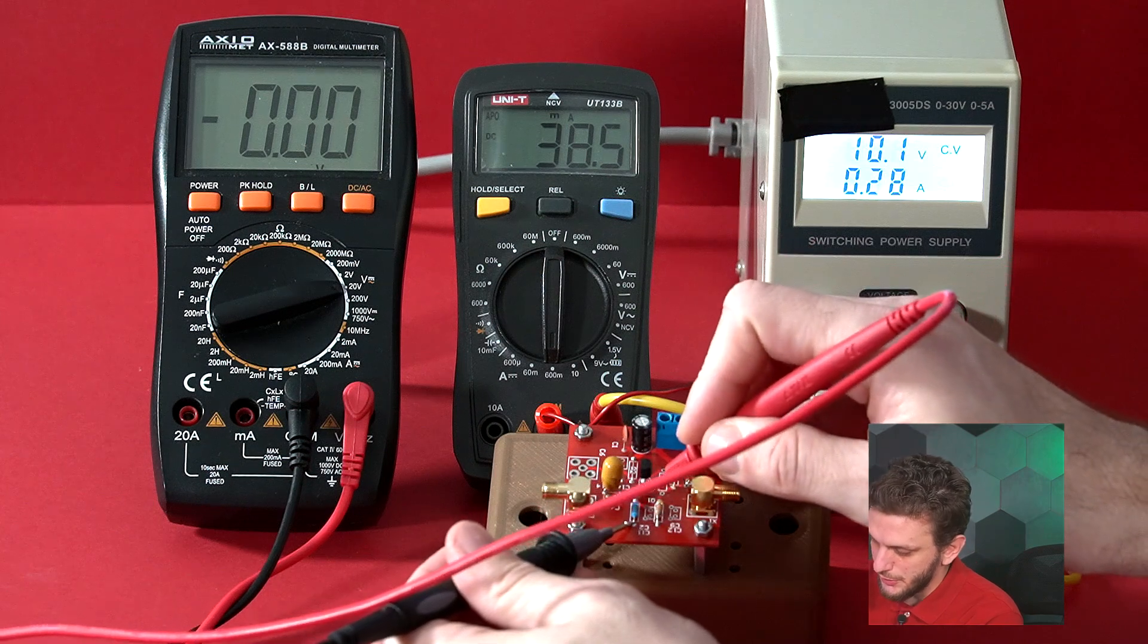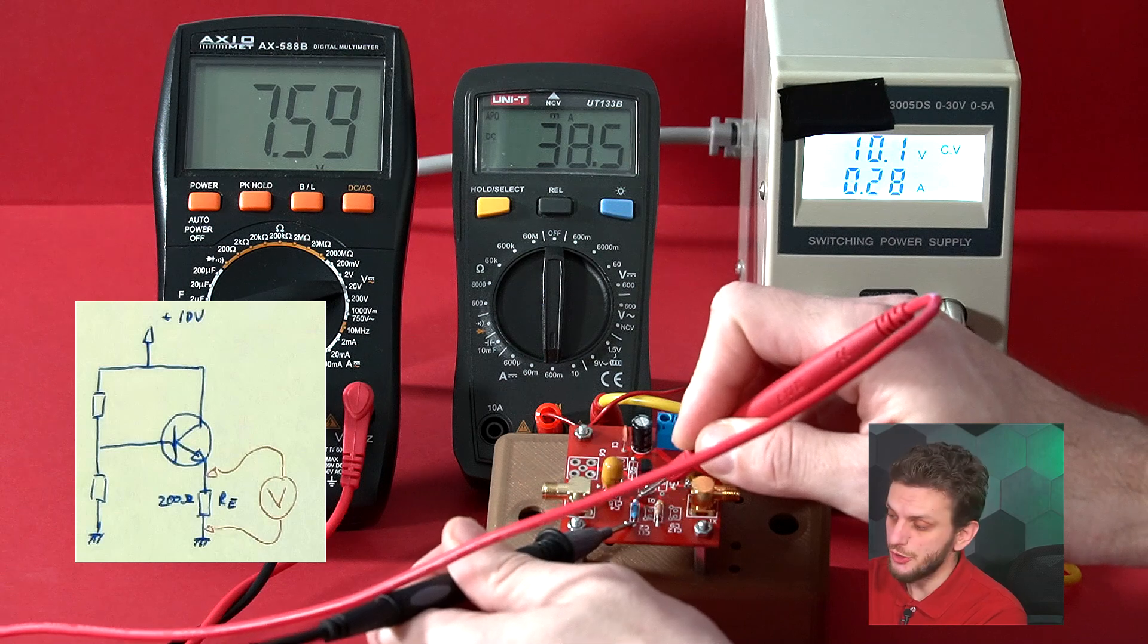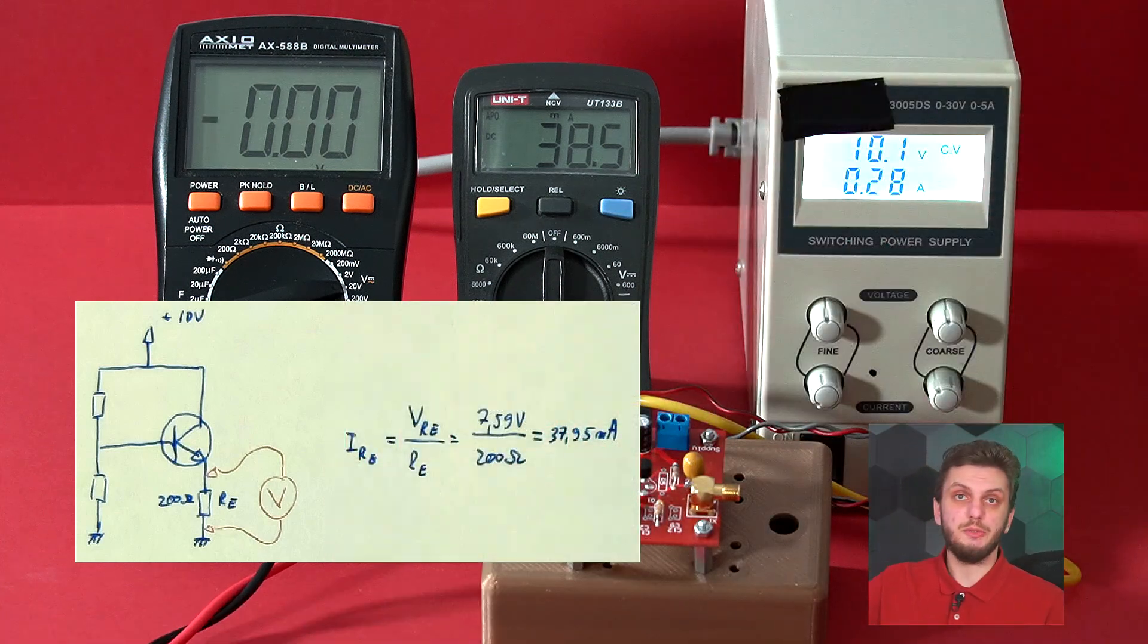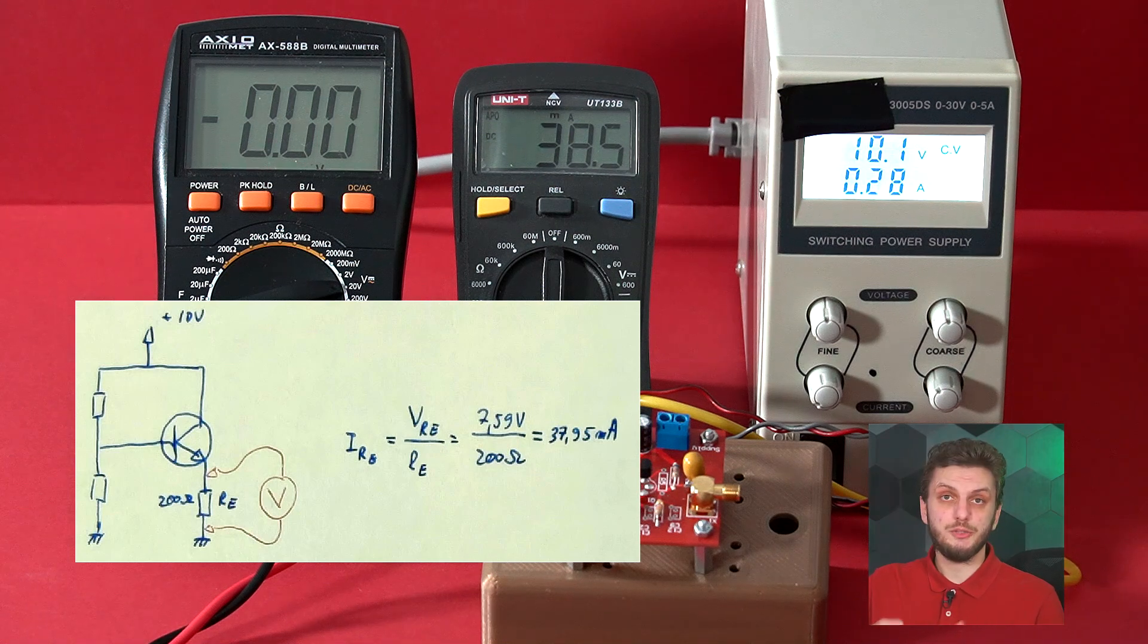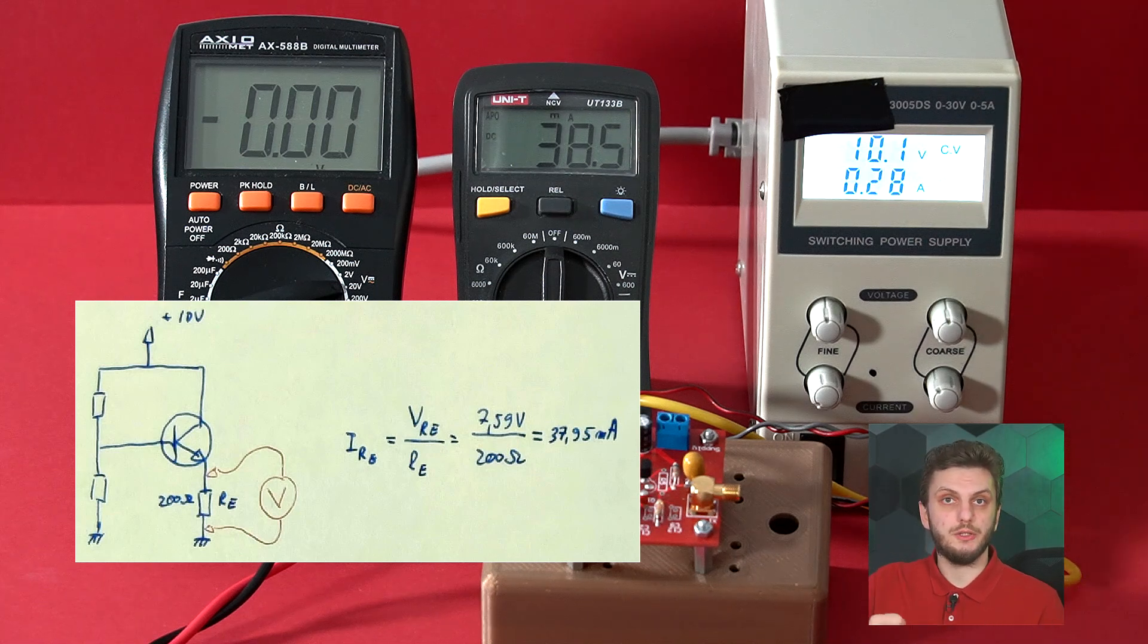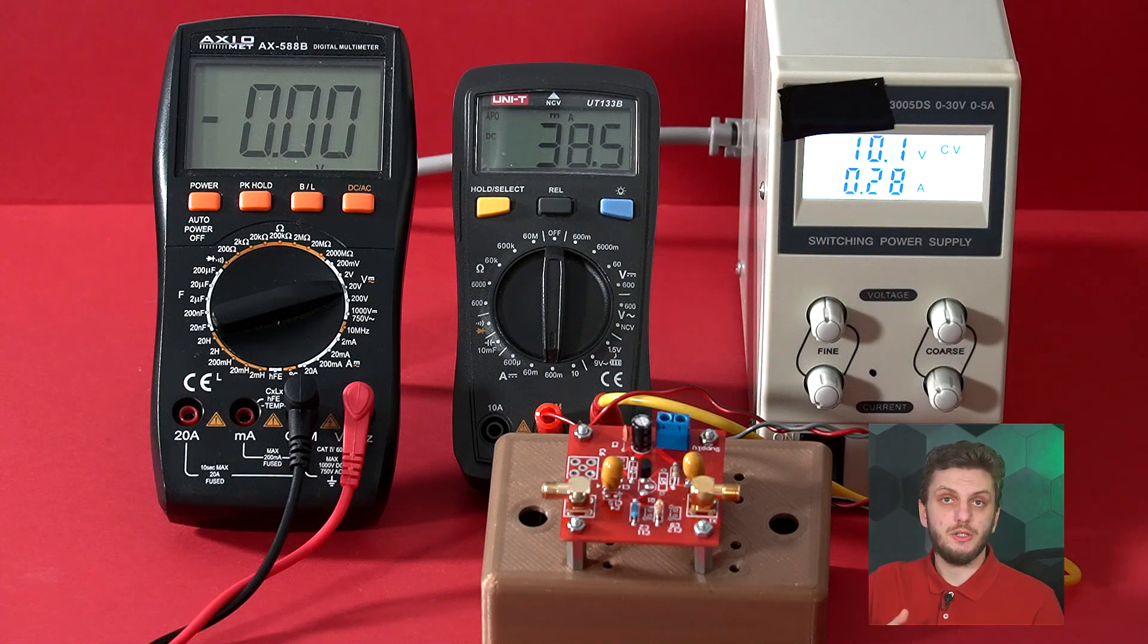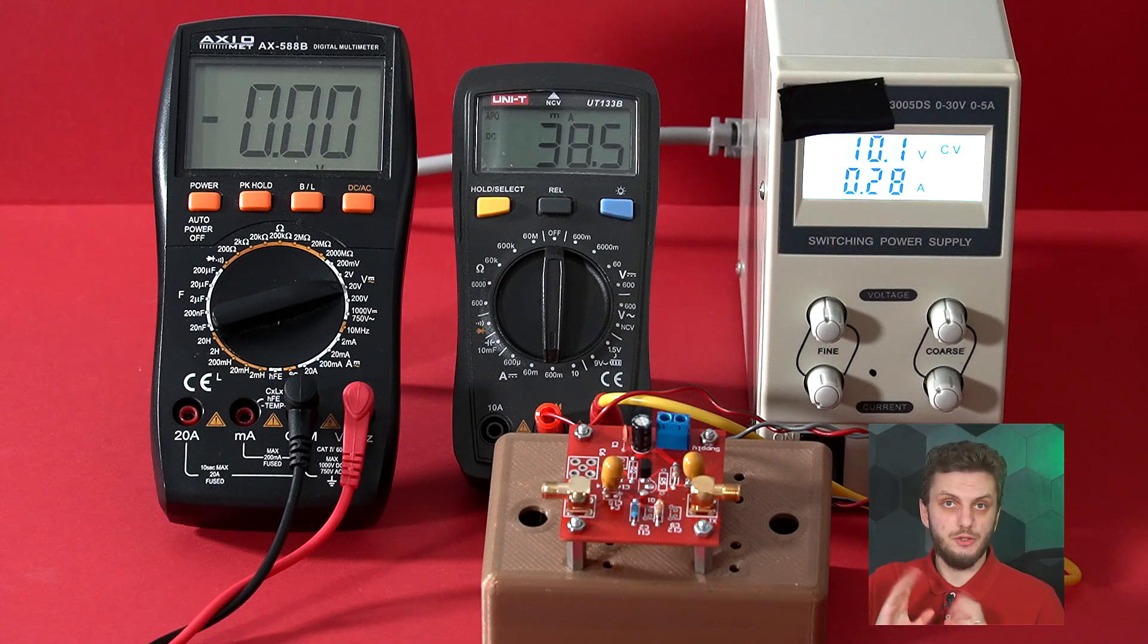We can determine the emitter current by measuring the voltage drop on the emitter resistor, 7.6 volts. From this, knowing that the emitter resistor is 200 ohms, we can determine that approximately 38 milliamps of the 38.5 is going through the emitter. Most of the current running through the circuit is running through the emitter collector circuit, so everything is working as expected so far.